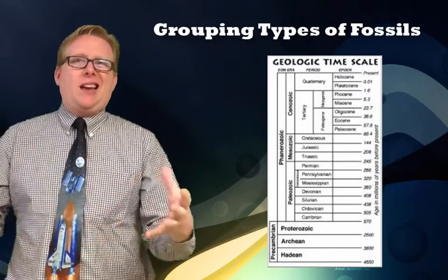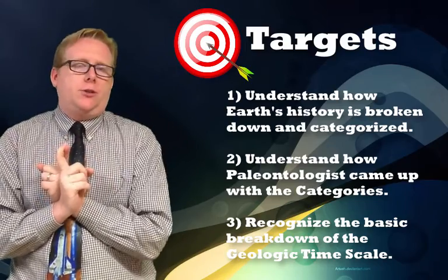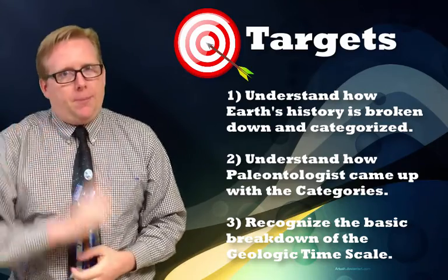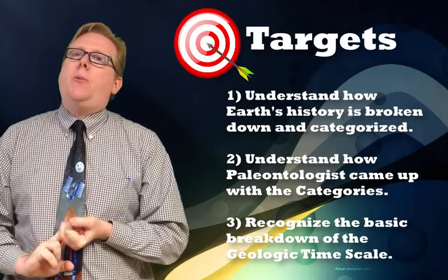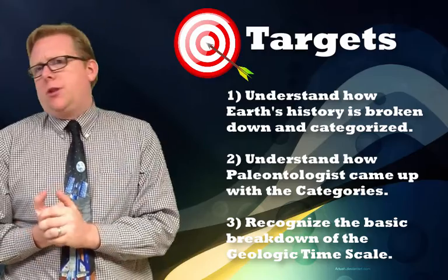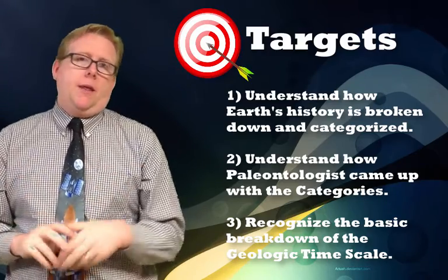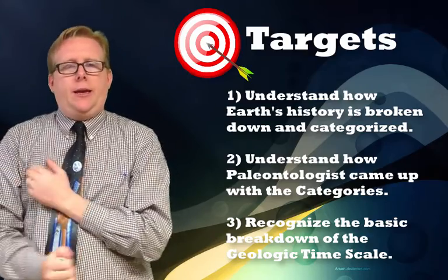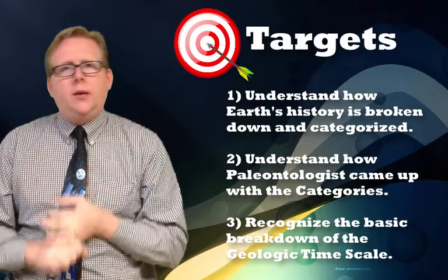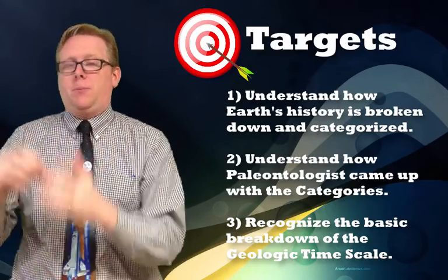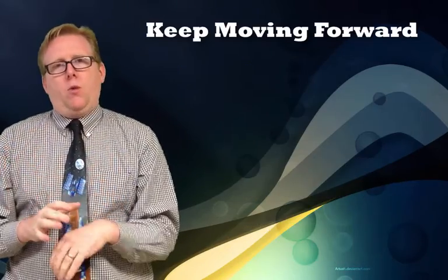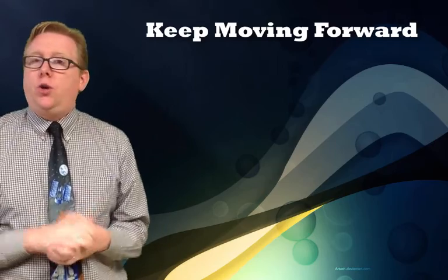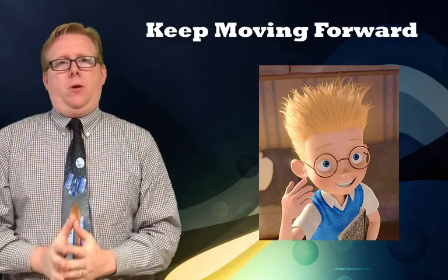Let's take a look at what we covered in our video. One, we understand how the Earth's history has been broken down and categorized — into periods, eras, and eons, all based upon these little Brachiopod fossils. Two, we understand how paleontologists came up with these category names: especially for periods, they used the location where they found the fossils. Then based on similarities, periods were grouped into eras and eons. Three, we recognize the basic breakdowns: eons, eras, and periods — and if you want to get technical, epochs are even smaller sections of a period. Remember, you can always go back, hit pause, or rewind if you need more time on any part.